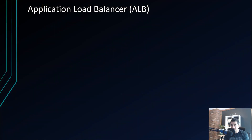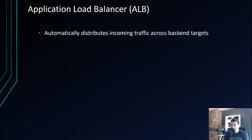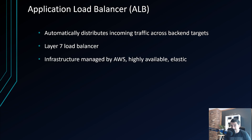So what is Application Load Balancer? It automatically distributes incoming traffic across multiple backend targets. ALB is a Layer 7 load balancer, so it works on the application layer. The underlying infrastructure is managed by AWS and is highly available and elastic — so if traffic goes up, your load balancer scales up to accommodate the increased rate of traffic.